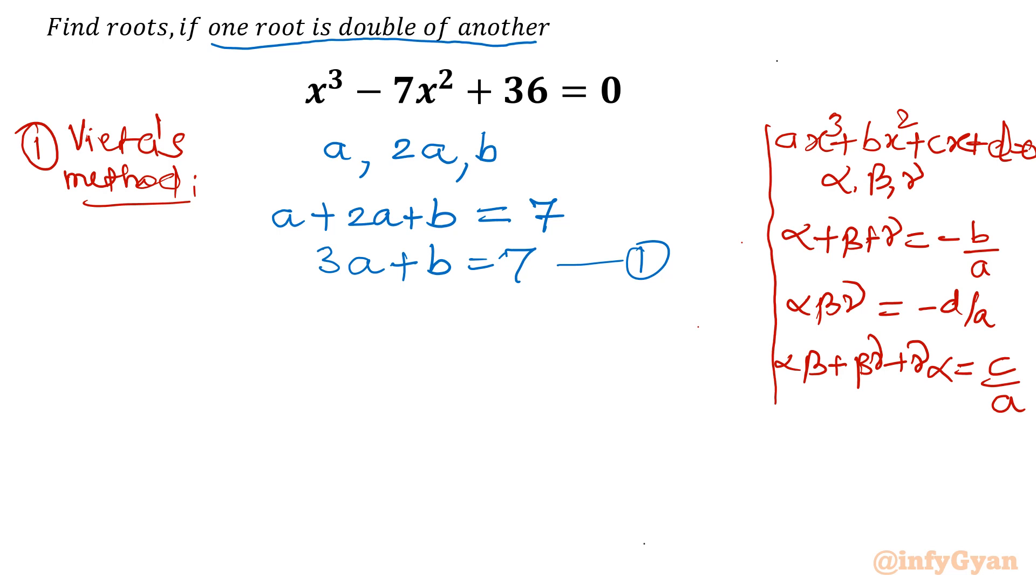Now I will write product of roots. So let's take the product: a × 2a × b = -36, because the formula is -d/a where d is 36 and a is 1.